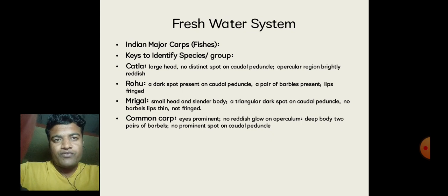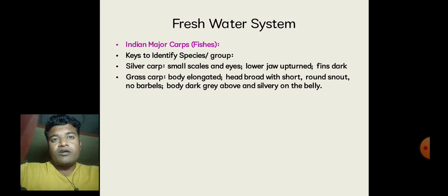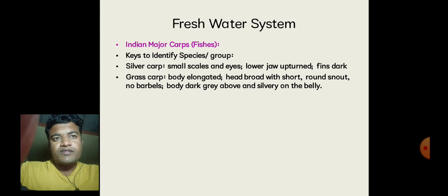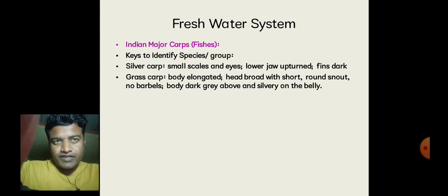To identify Common Carp: the eye is prominent, no reddish glow on the operculum, deep body, two pairs of barbels, and no prominent spot on the caudal peduncle. For Grass Carp: the body is elongated, head broad with a short round snout, no barbels, body dark gray above and silvery on the belly. These key external morphology characters allow us to easily identify each species.